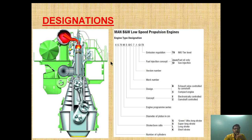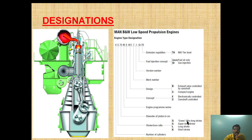This is the main engine of the ME series. If someone says their engine specification is 6S70ME-C7.1GI T3, what do you mean by that? The first letter indicates the number of cylinders. The S indicates the type of stroke — S for super long stroke, L for long stroke, K for short stroke, and G for green ultra long stroke.